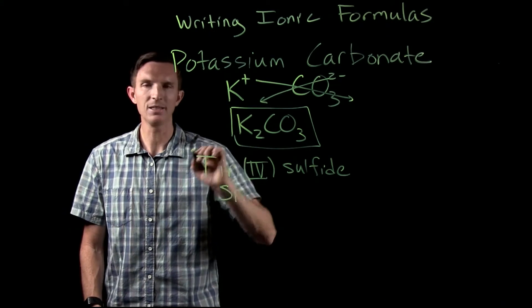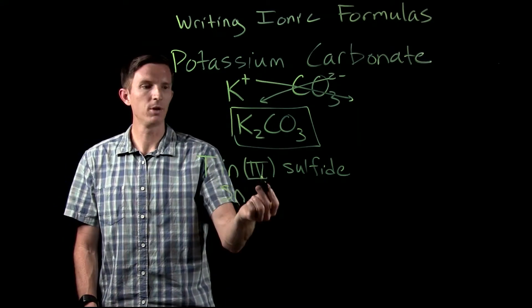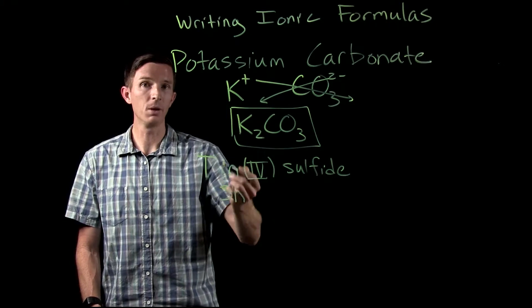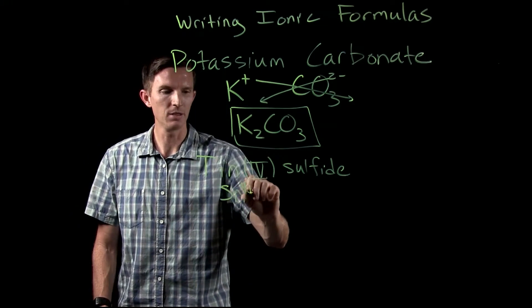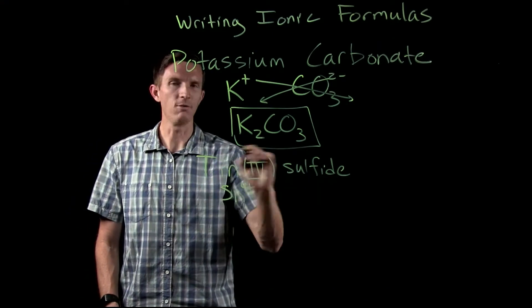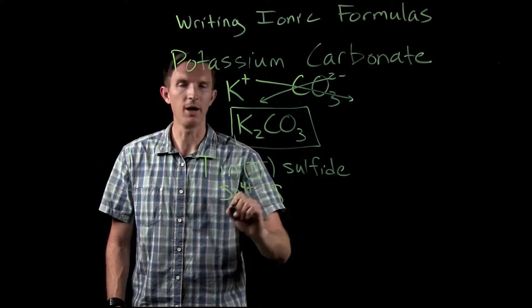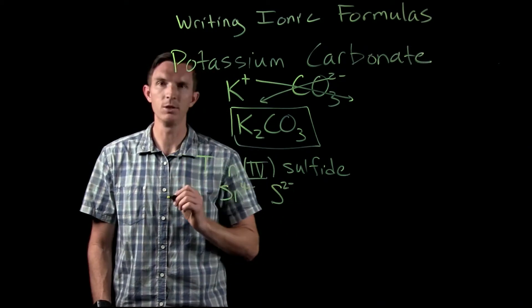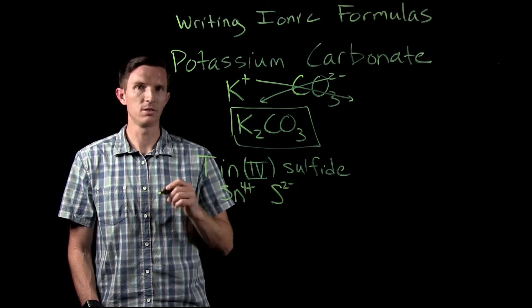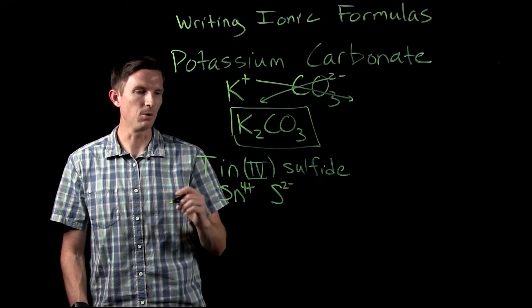We have tin, which is Sn. We're given this Roman numeral, which means the charge of the tin. So that would be tin 4 plus. Sulfide would be the sulfur ion. Sulfur is group 6A, so we know it's going to make a negative 2 charge. It doesn't have multiple possible charges, just that one.